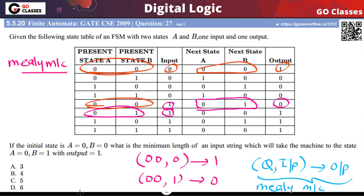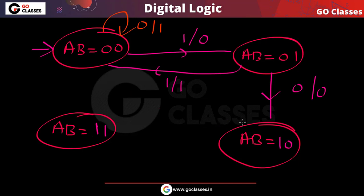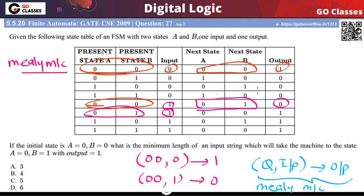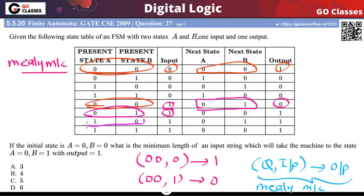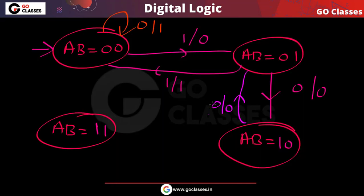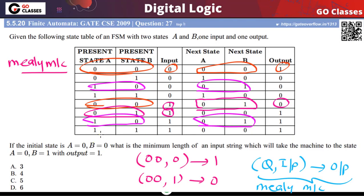In state 1,0, if the input is 0, you will go to state 0,1 and the output will be 0. If the input is 1, the output will be 1 and you will also go to state 0,1. So from state 1,0, you always go to state 0,1 regardless of input.